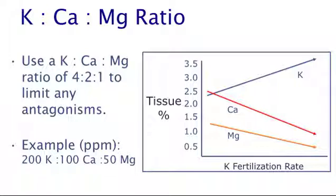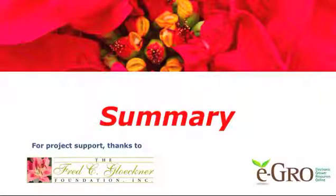In this case, as potassium fertilization rates are increased, the tissue levels of both calcium and magnesium are negatively affected and decline. Fertilizing poinsettias with 200 parts per million potassium, 100 parts per million calcium, and 50 parts per million magnesium will help avoid problems. In summary, calcium is the main building block of plant cells. Target calcium fertilization rates are around 100 parts per million, and substrate levels should be between 100 and 200 parts per million for adequate supply. Always encourage good air circulation during periods of cloudy weather, and use calcium chloride sprays if needed.